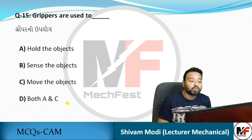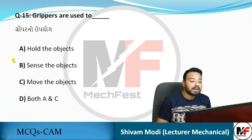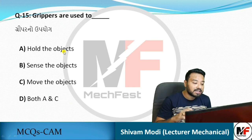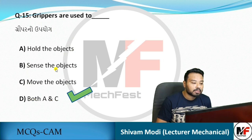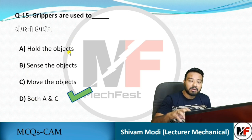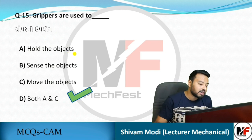Next question: grippers are used to — options include hold the object, sense the object, and move the object. A gripper is used to hold the object and move it from one place to another. So the answer is both A and C.